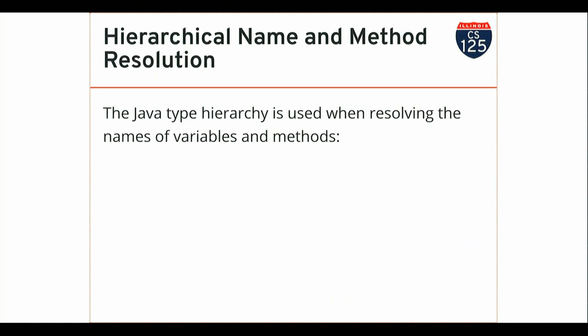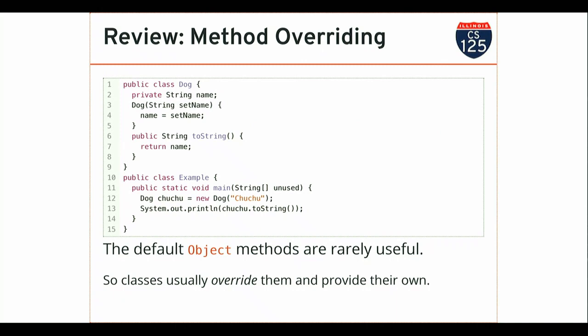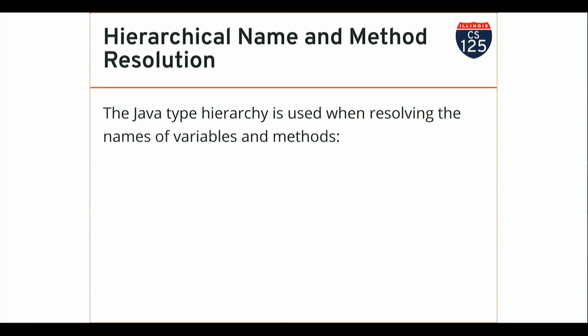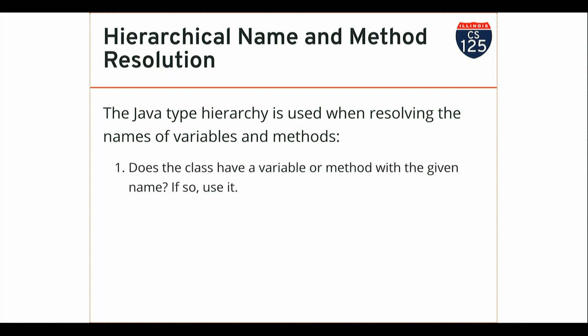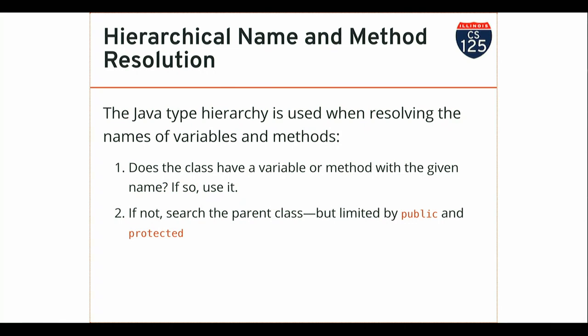When Java tries to find what method to run — when I call toString on any Java object — the process works as follows. Java starts with the class that the object actually is, the class to the right of new when I created the object. It looks for a method matching that signature. If it doesn't find one defined by that class, it looks in the parent class. If it doesn't find one in the parent, it looks in the parent's parent. It continues until it either reaches capital O Object or fails because no class provides that method. So I start in the class and keep searching up the tree.